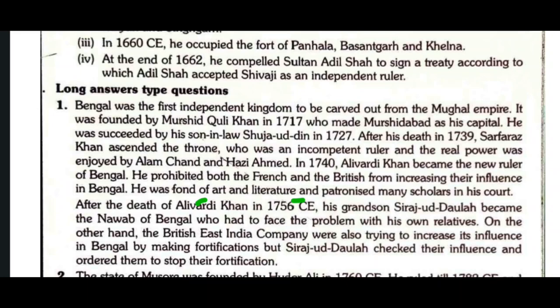Alivardi Khan prohibited both the French and the British from increasing their influence in Bengal. He was fond of art and literature and patronized many scholars in his court. After his death in 1756, his grandson Siraj ud-Daulah became the Nawab of Bengal, who faced problems with his own relatives. The British East India Company was also trying to increase its influence through fortifications, but Siraj ud-Daulah checked their influence and ordered them to stop.